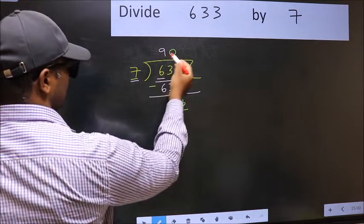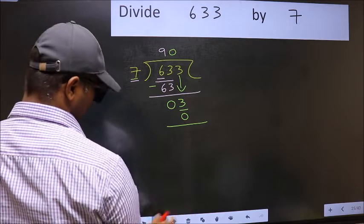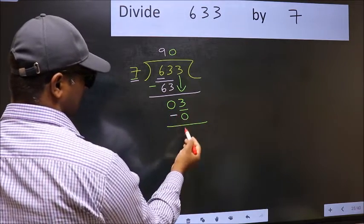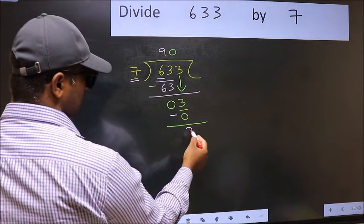So 7 into 0, 0. Now you should subtract. 3 minus 0, 3.